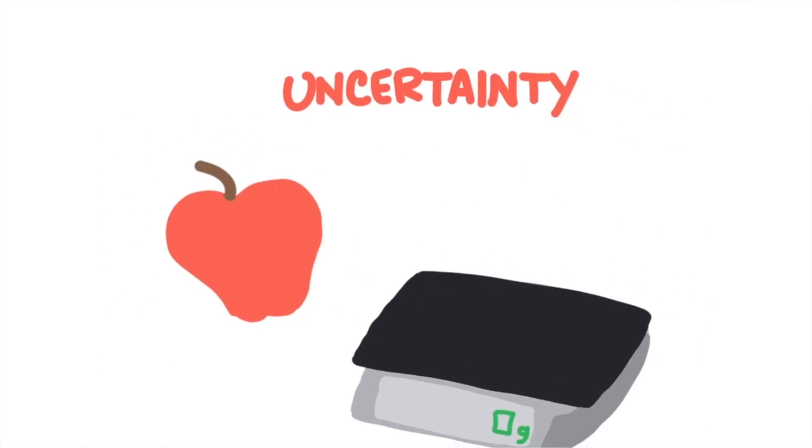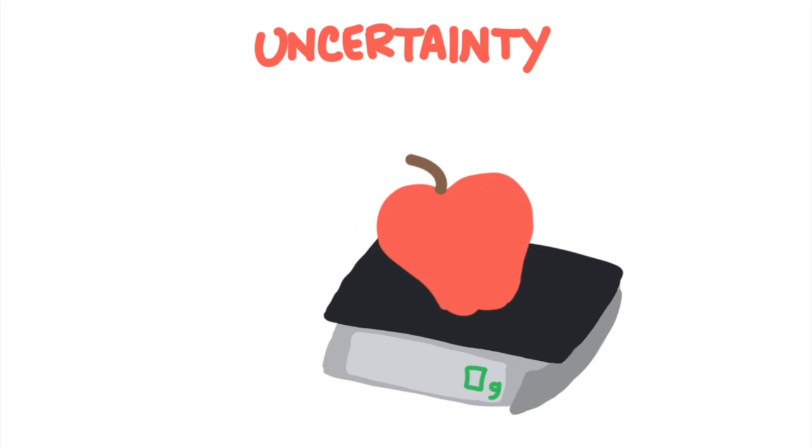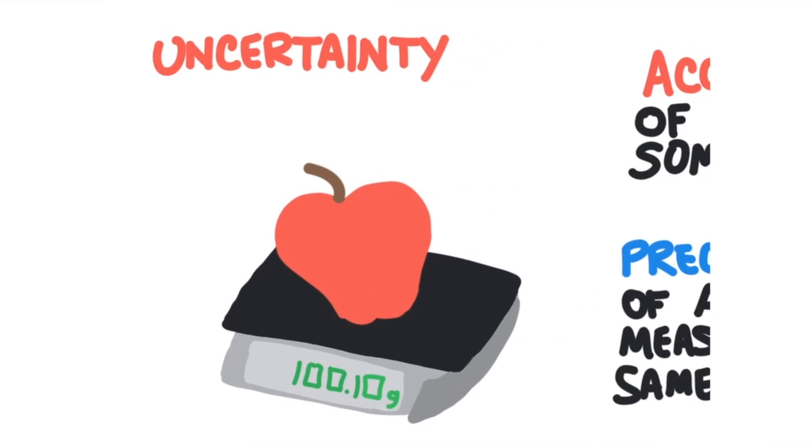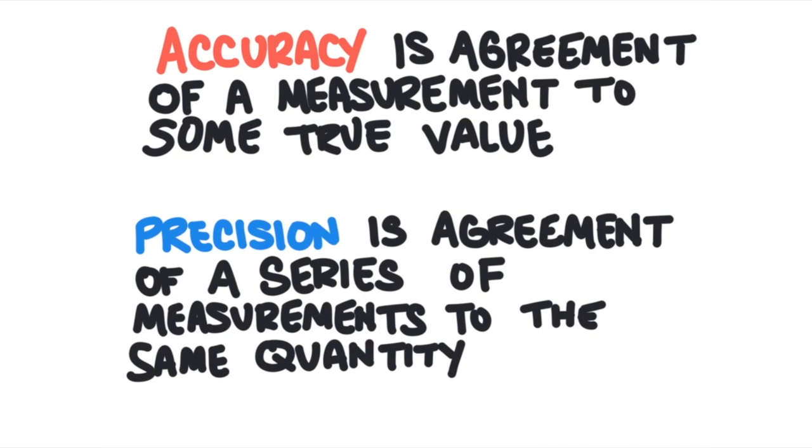Every measurement has a bit of uncertainty. This apple has a mass of 100 grams. But if I were to use a better balance, I may get a mass of 100.10 grams. My original measurement was rounded off. All measurements have some uncertainty. It is extremely important to communicate measurements well so that we indicate how certain we are, and we don't report measurements to be more precise than we have actually had the ability to measure. I was really careful to use the term precise rather than accurate.